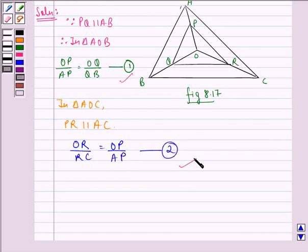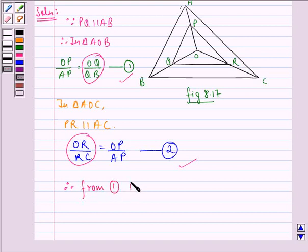Now in 1 and 2, we notice that OP by AP is equal to OQ by QB and OR by RC. Therefore from 1 and 2, we have OQ by QB, that means this by this, is equal to OR by RC, that means this by this.